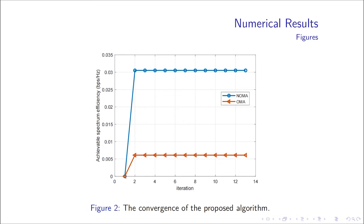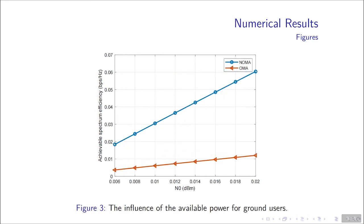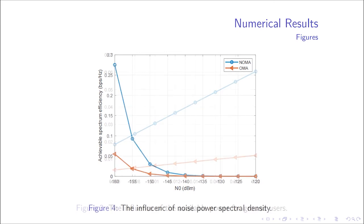Figure 2 shows the convergence of the algorithm. Figure 3 shows the influence of the available power of ground users. It shows that with more power available, the achievable spectrum efficiency increases, and the NOMA scheme has higher spectrum efficiency than the OMA scheme. As seen in Figure 4, with higher noise power spectral density, the spectrum efficiency of both of the two schemes decreases.